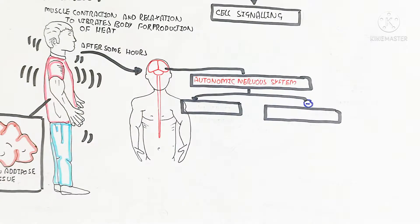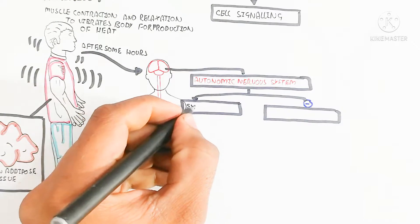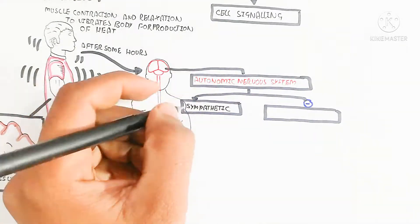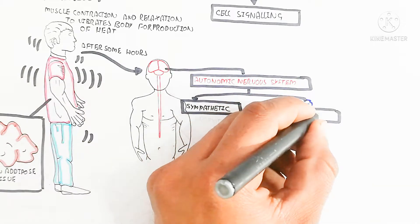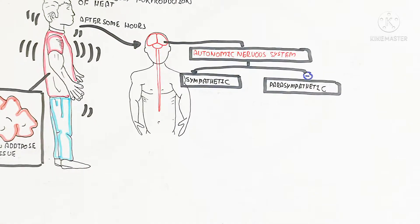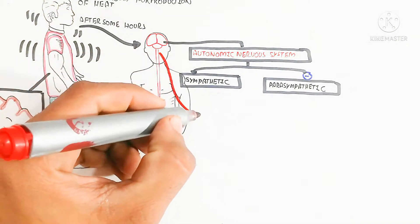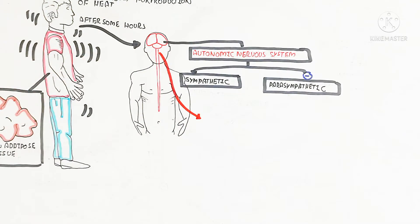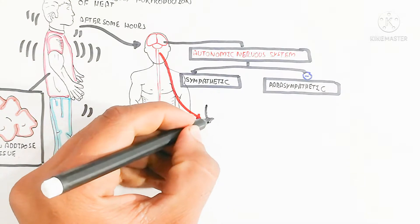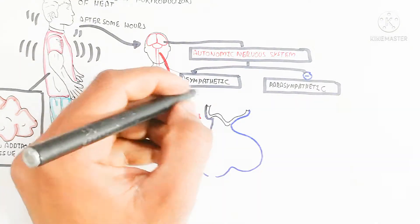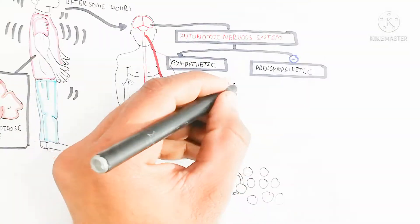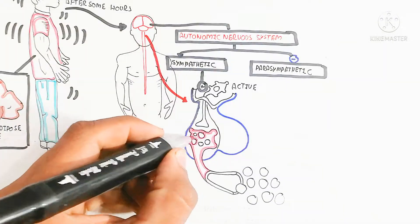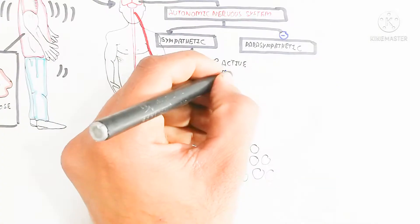The fight-or-flight response stimulates the higher brain cortex to signal the hypothalamus. The hypothalamus produces adenocorticotropic releasing factor, which stimulates the anterior pituitary gland to produce adenocorticotropic hormone (ACTH). This ACTH is then released and stimulates the adrenal gland.